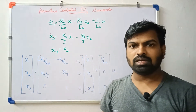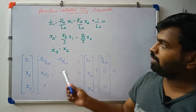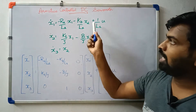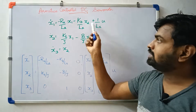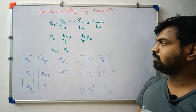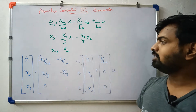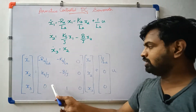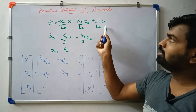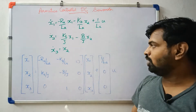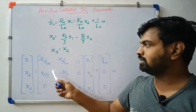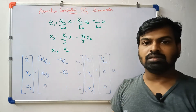Now x1 dot, x2 dot and x3 dot are written in matrix form. The A matrix has entries including minus b/J and 0, with x2 coefficient 1 and 0. The state variable vector is x1, x2, x3, plus B times u, where the corresponding input term is 1/LA. This is the state equation: x dot equals A times x plus B times u.